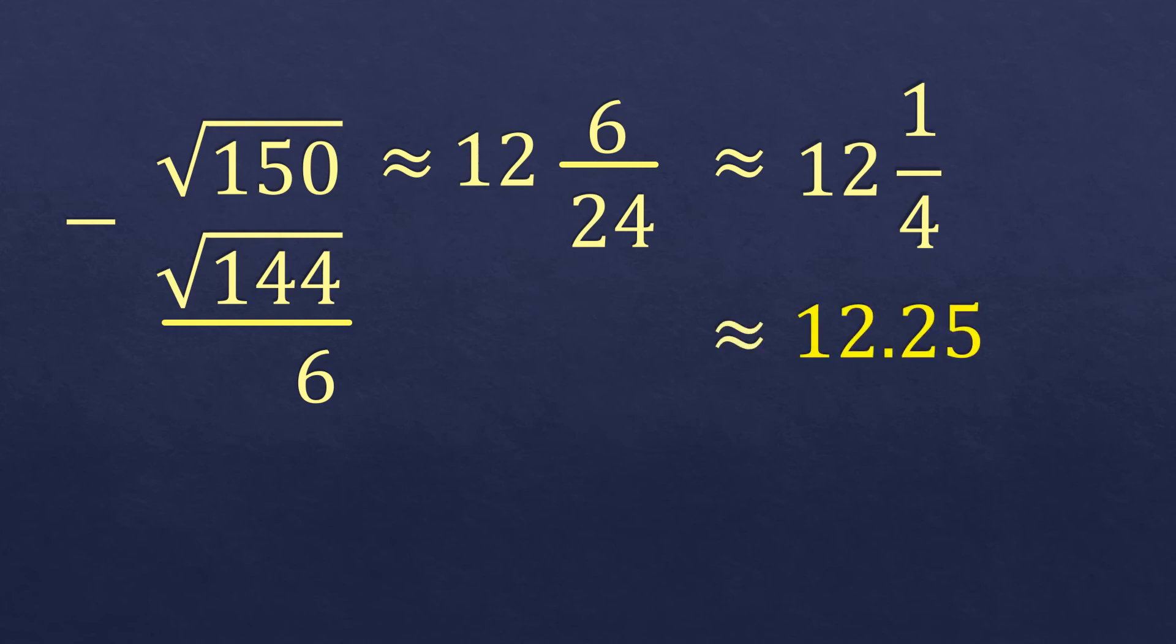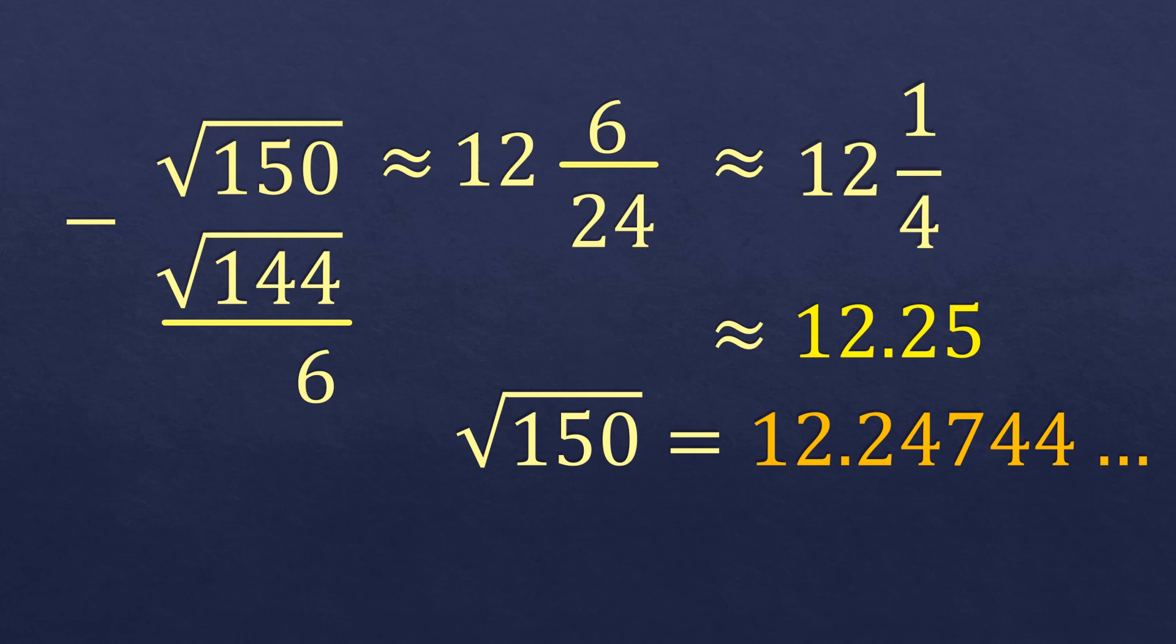If you don't know how to convert the fraction to decimal, then you can watch my other videos for how to convert it from fraction to decimal. Now let's get the exact value square root of 150. Here's the exact value square root of 150. It's 12.24744 and so on. So it's very close to 12.25.